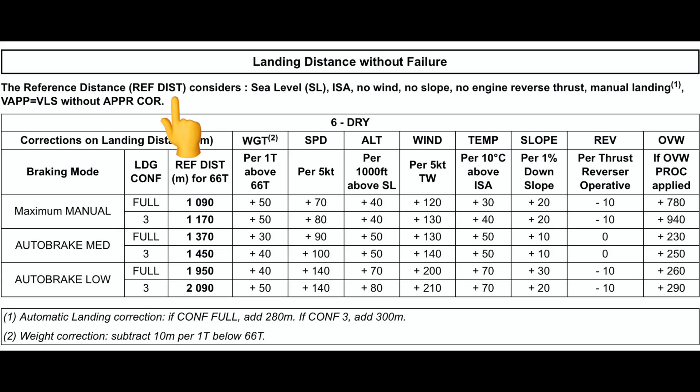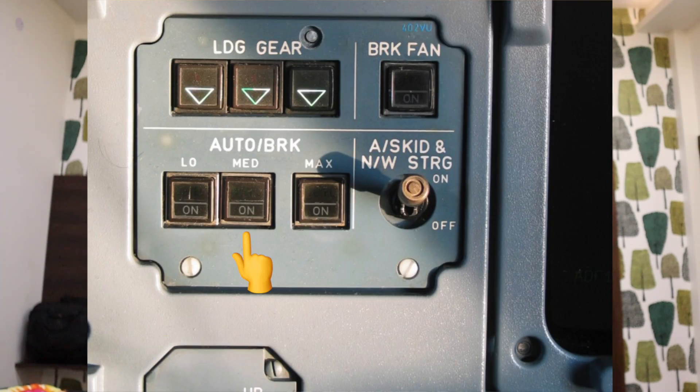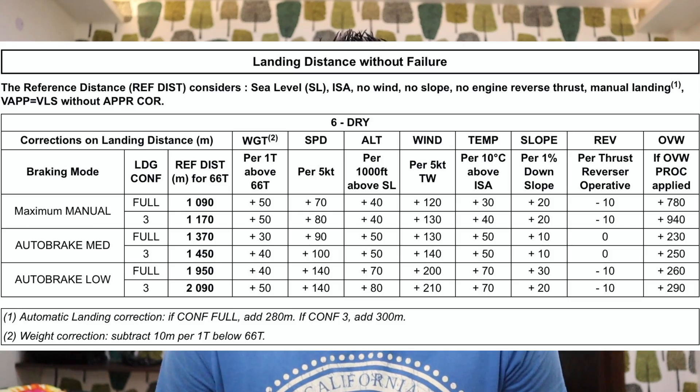At the top of the table, the reference distance considers sea level conditions in ISA — no winds assumed, no slope, no thrust reversals, not an automatic landing, and no speed correction. Using these conditions, we are given a reference distance. On the left side of the table you can see the braking mode. The Airbus A320 has automatic braking, so the pilot does not have to manually apply the brakes upon landing. There are two settings: low and medium. For this case, we will assume medium brakes.